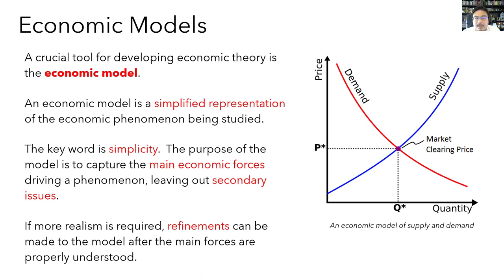Another benefit of writing down economic models is that they allow us to make quantitative predictions with more precision than if we conducted all our analysis using words. By writing down a supply and demand model of a market, we can make quantitative predictions about what happens to the market price when supply or demand changes. While the predictive accuracy of economic models is often criticized — sometimes fairly, sometimes unfairly — it's still better to have some quantitative prediction than to have none at all. The quantitative prediction of an economic model should never be the only thing a decision-maker goes by, but it's often a very helpful ingredient for when a business or government is trying to make a decision.